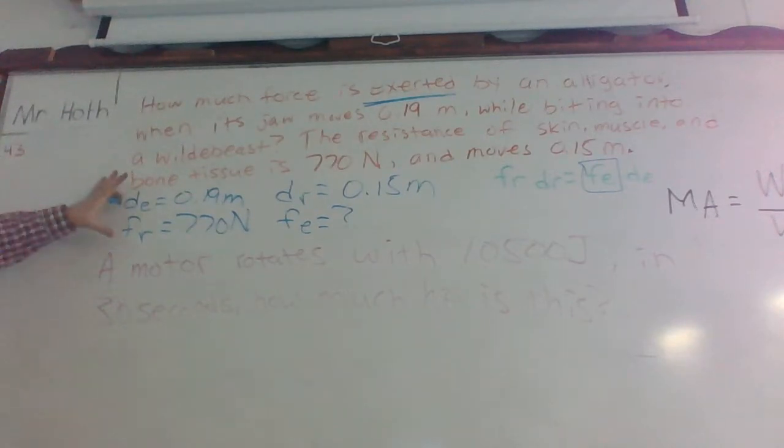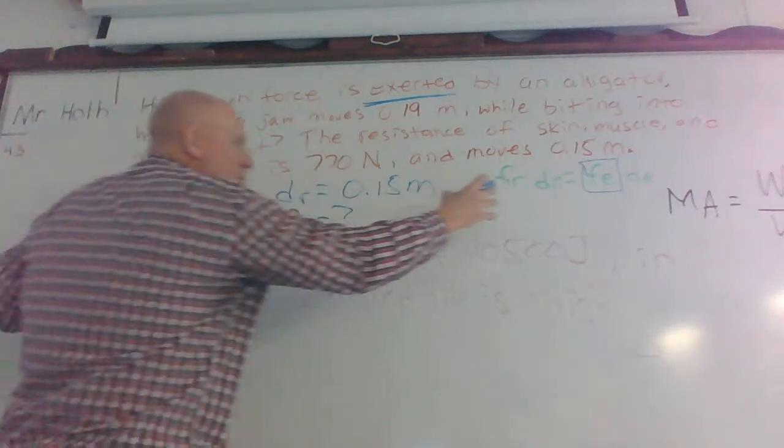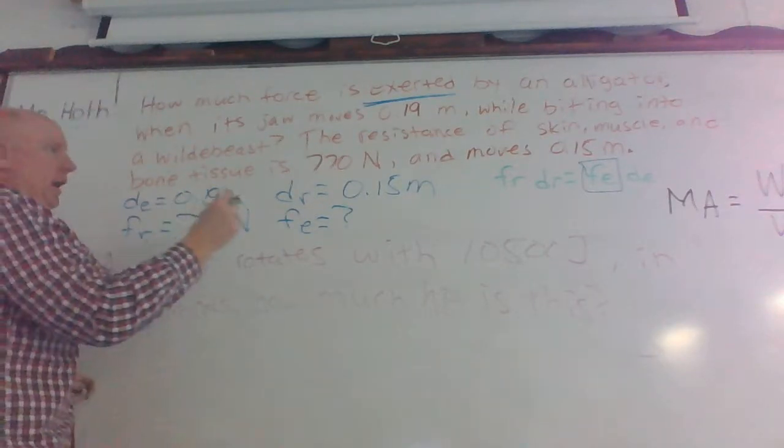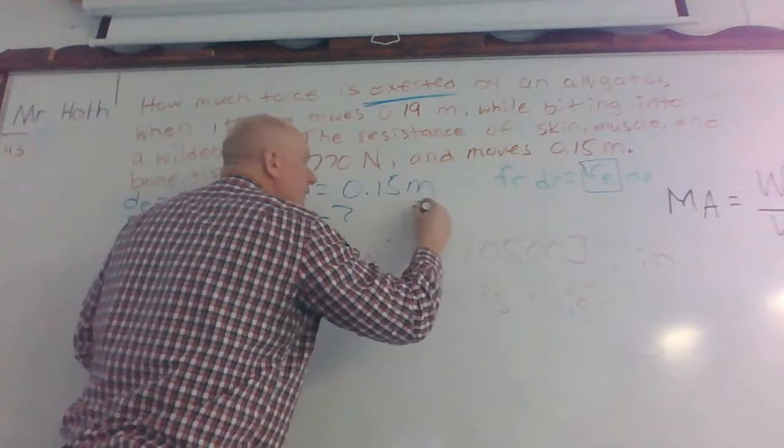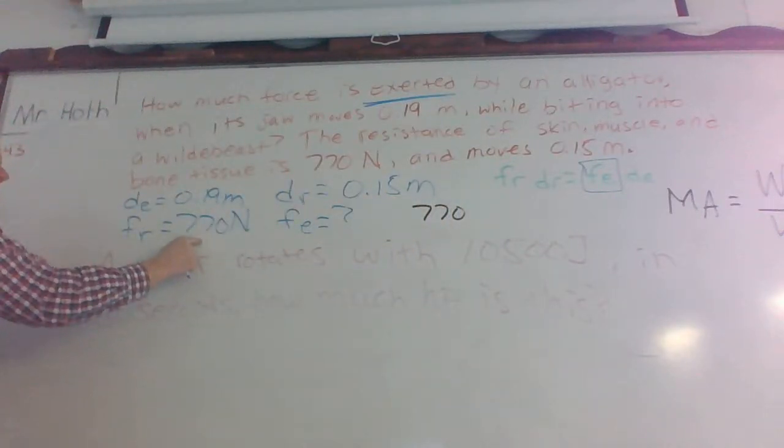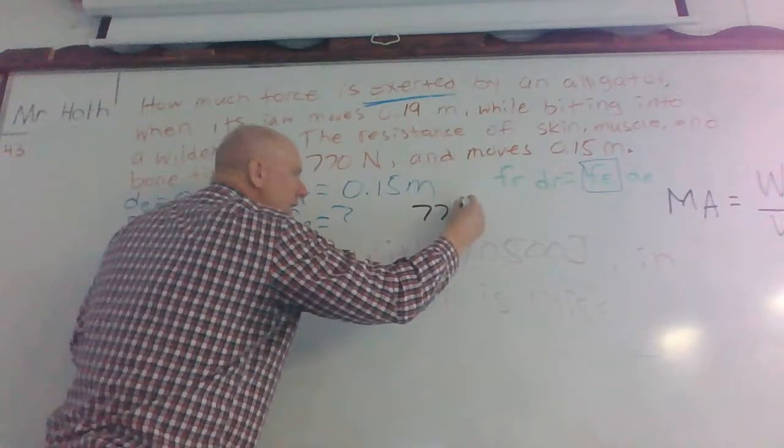So once we get it to this variable, or excuse me, this type of a setup, we do what the formula tells you to do. Which is what? What's on the left-hand side of the equation? So yes, but that's what the equation says, but I mean the number, sorry. Okay, so our resistance force is 770, okay, because we have that in our setup right here.